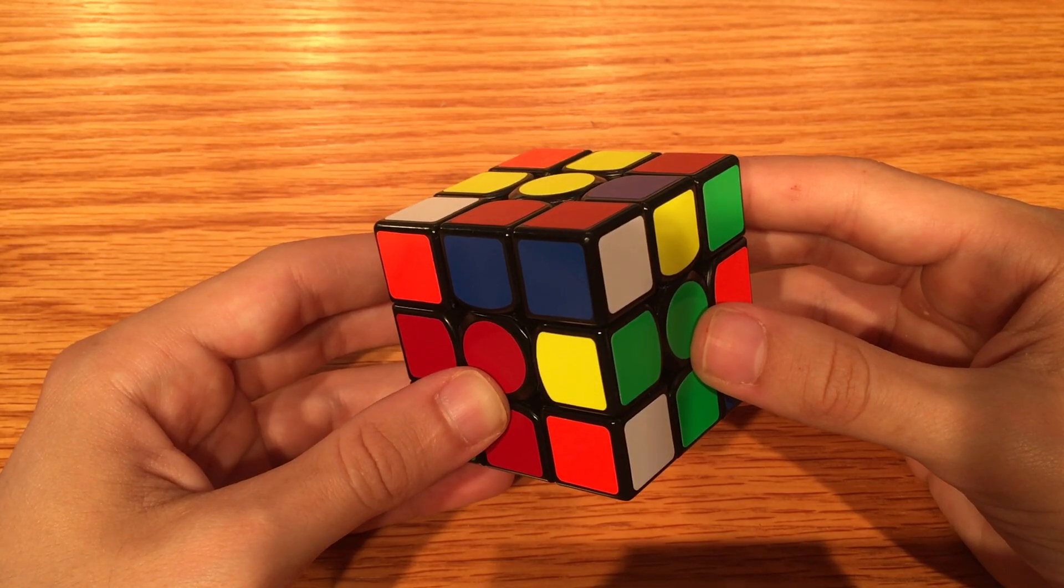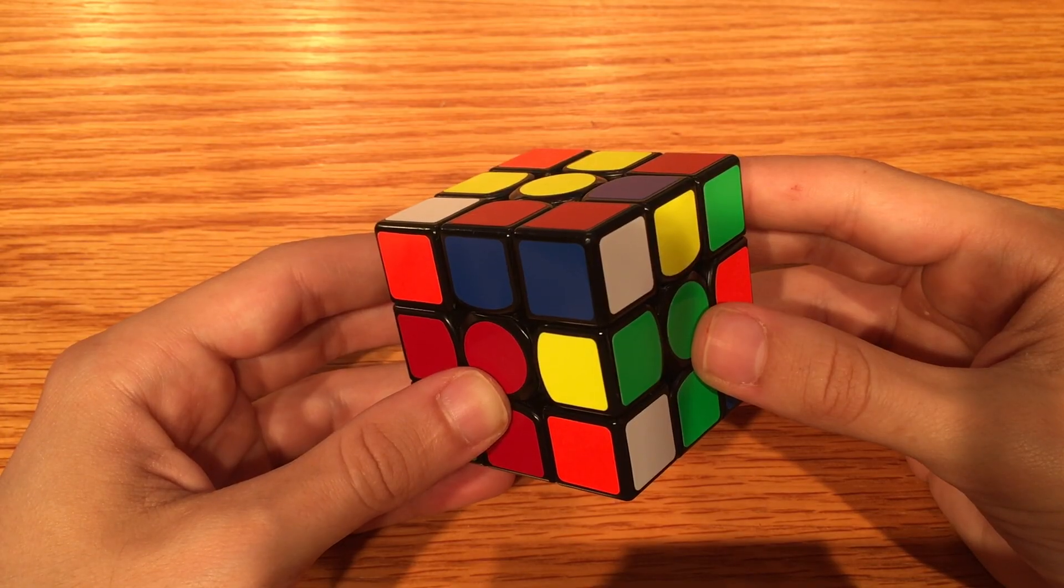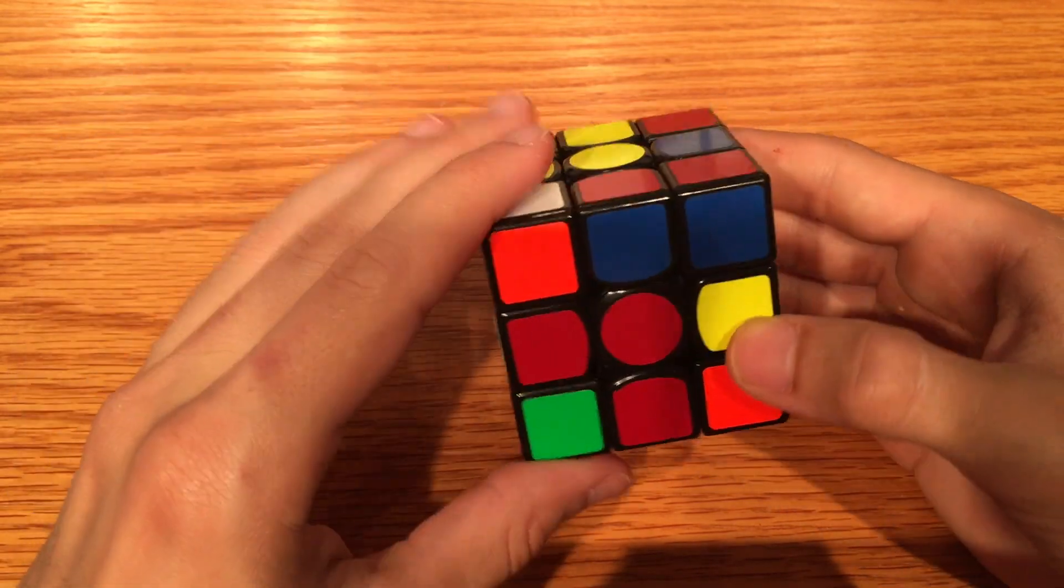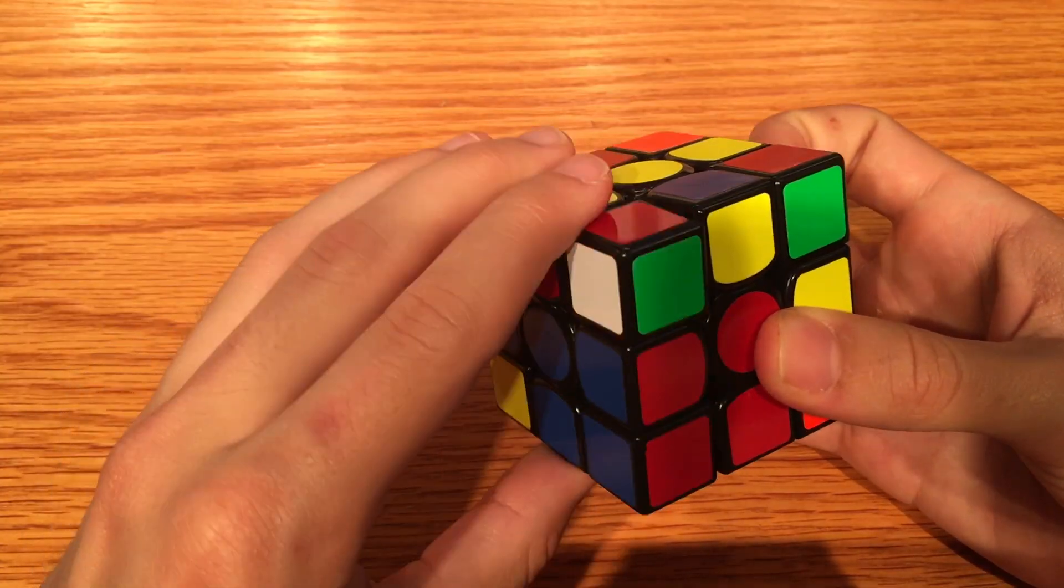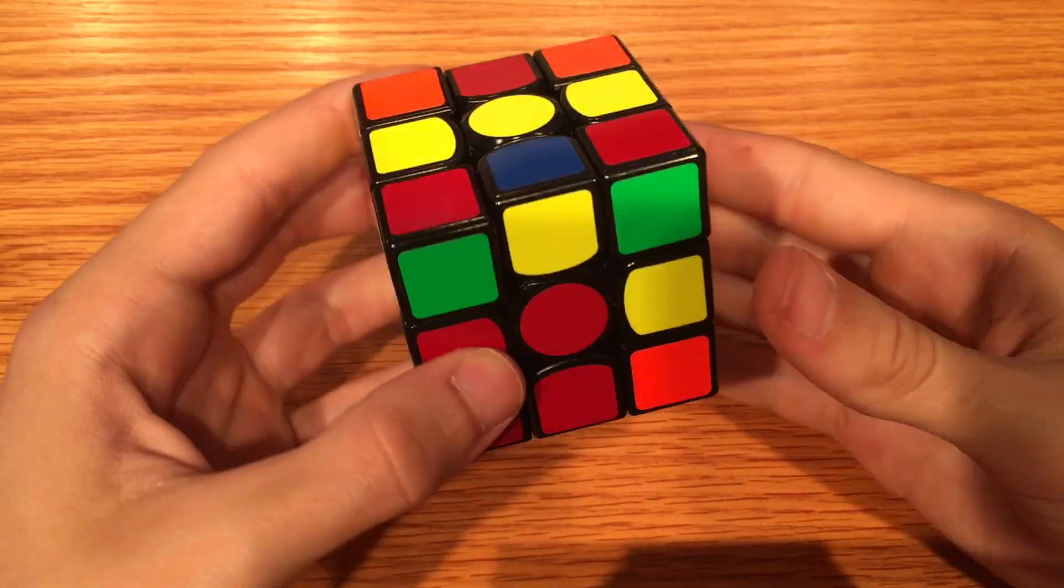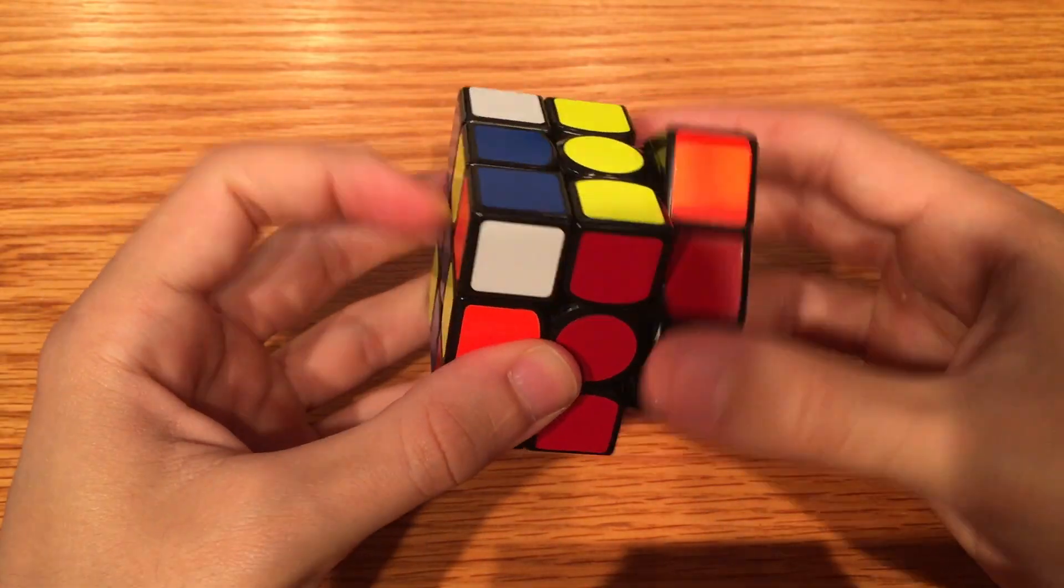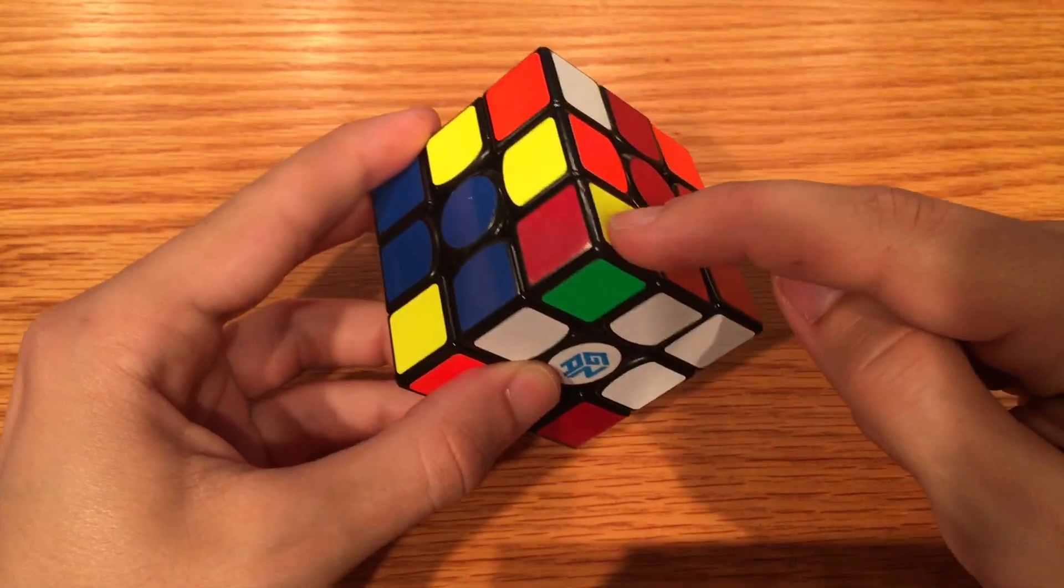Mistake number three: whenever you solve a new pair, you mess up one you've already finished. Here you see me solve the red-blue pair, but when I solve red-green, I've somehow messed up the red-blue pair.